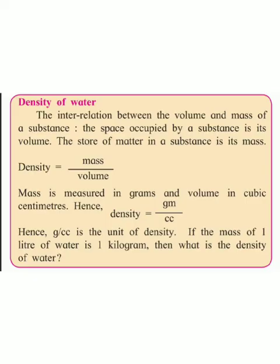Now, density of water. Paaniachi ghanata. Density equals mass divided by volume. Ghanata equals vastumaan divided by aakarman. Mass is measured in grams and volume in cubic centimeters. Hence, density equals grams divided by cc. Ghanate che ek gram prati ghanasemi asthe.